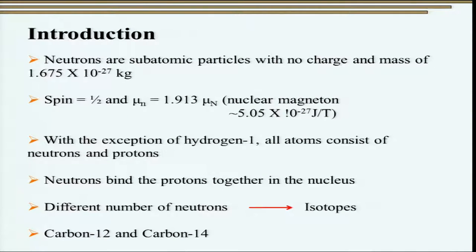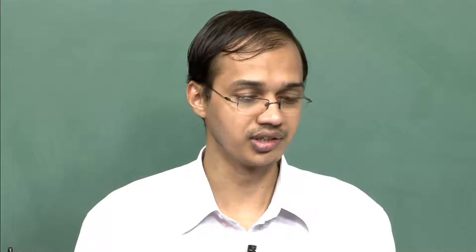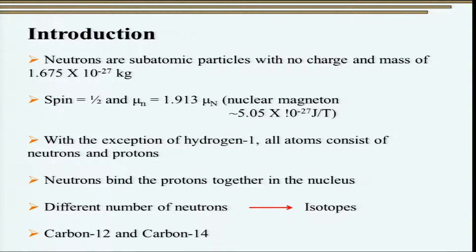We are all aware what exactly neutrons are. Neutrons are essentially subatomic particles sitting in the nucleus along with the protons. These particles are characterized with no charge and have a mass equal to 1.675 × 10⁻²⁷ kg, which is slightly higher than that of protons. In addition to mass, neutrons are characterized with a spin of half and a nuclear magnetic dipole moment of 1.913 times that of a nuclear magneton, approximately equal to 5.05 × 10⁻²⁷ joule per tesla.